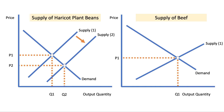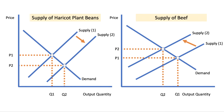If there's an increased supply of haricot beans and land is in finite but competitive supply, then in theory this diversion of land towards plant-based crops might mean that the market supply of beef falls — shifting to the left from S1 to S2. Much depends on the decisions taken by the majority of farmers in the market. And beef can also be imported into a country if domestic farmers have switched crops in significant numbers.